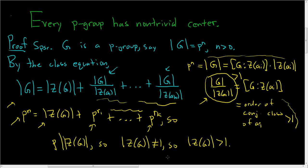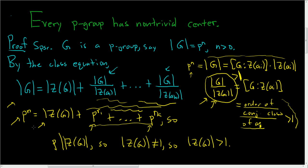That's how you prove that every p-group has non-trivial center. The key point is that each term from the class equation is the order of a conjugacy class of a_i, which has size bigger than 1 and divides p to the n, so it must be a power of the prime. Therefore p divides all of those terms, p divides the total, and so p must divide the order of the center.